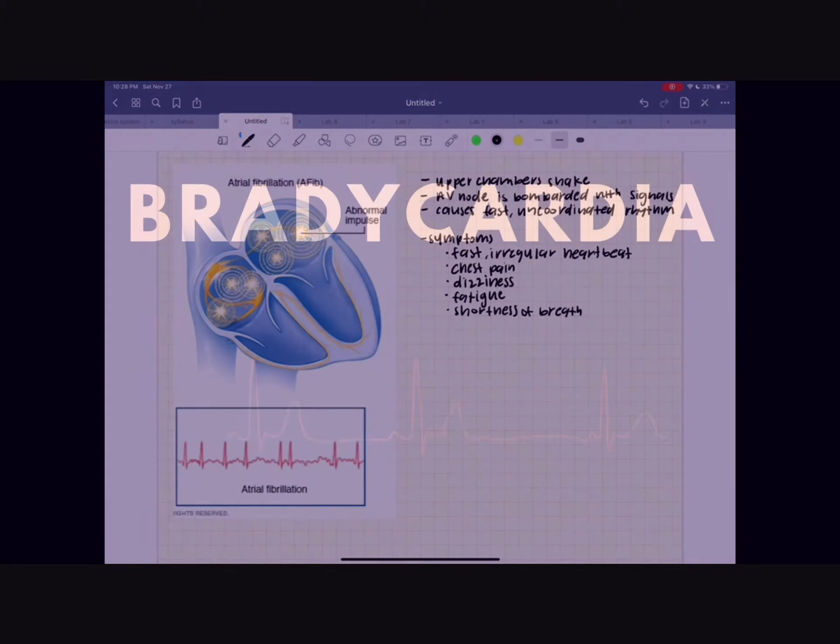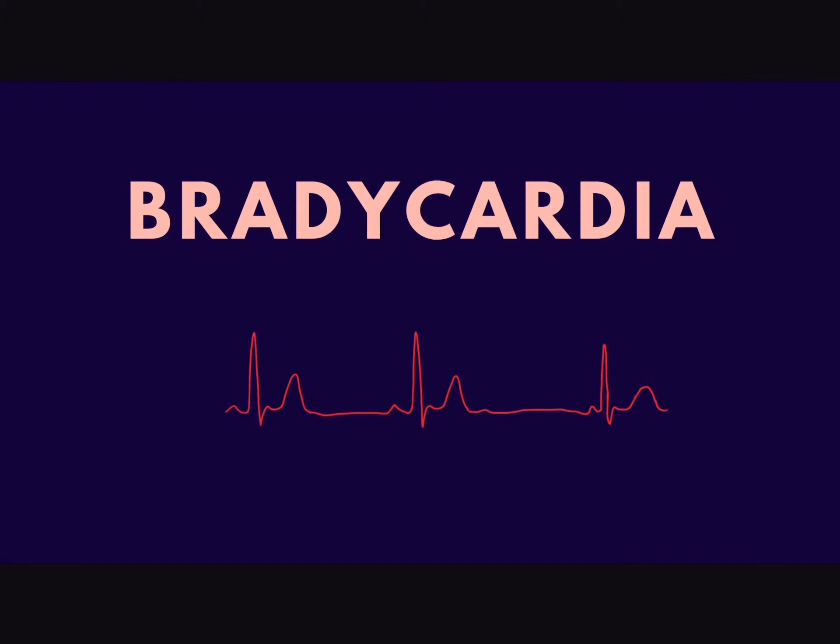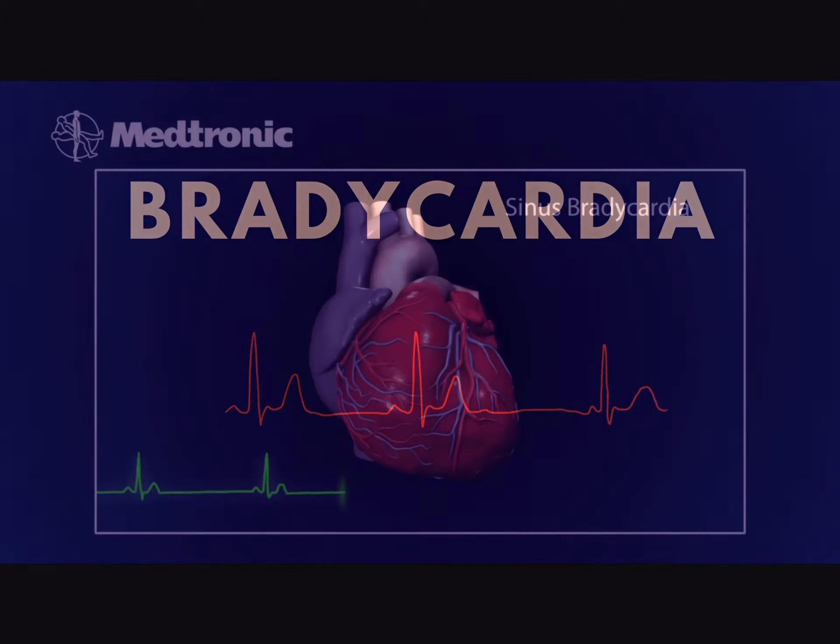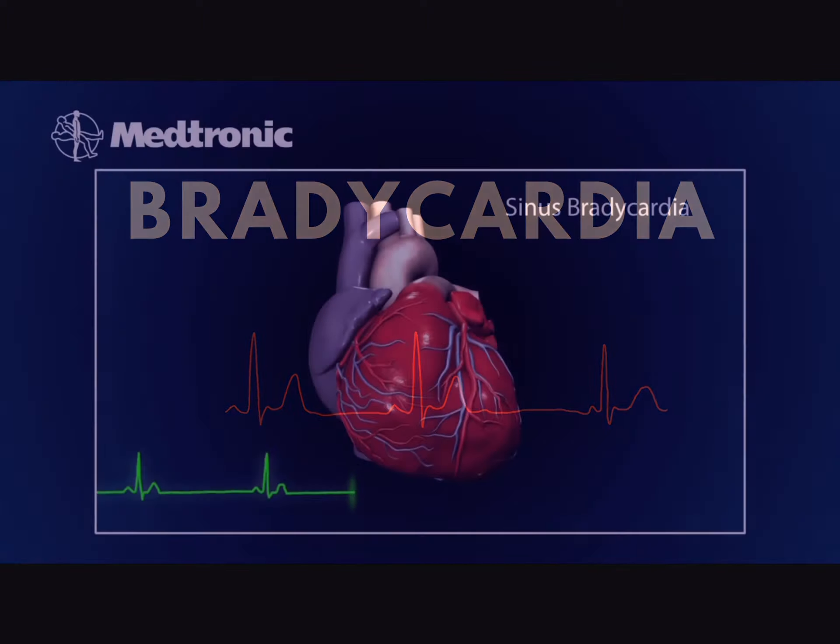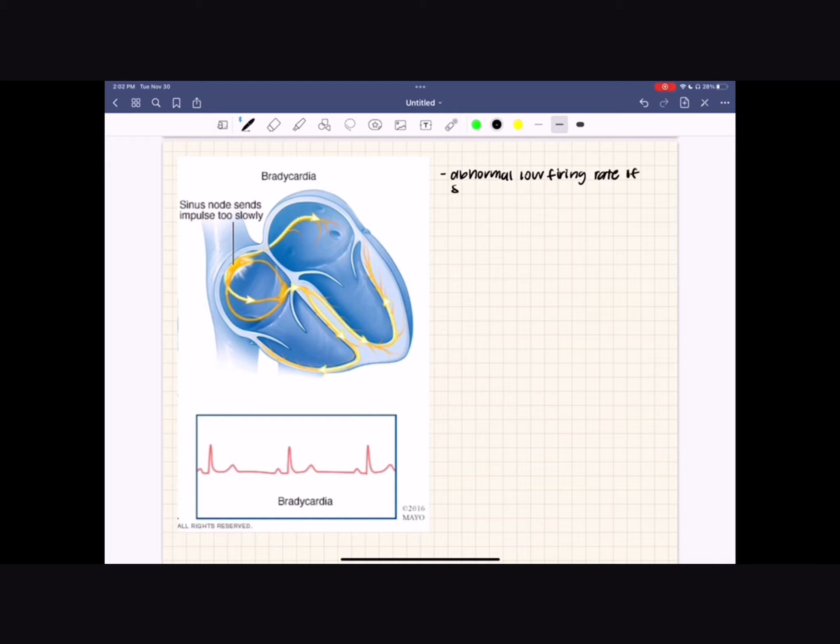On the opposite side of the spectrum, bradycardia is an abnormal slow heartbeat. This can be caused by abnormal low firing rate of the SA node or problems in the conduction pathways of the heart that don't allow electrical impulses to pass properly from the atria to the ventricles.